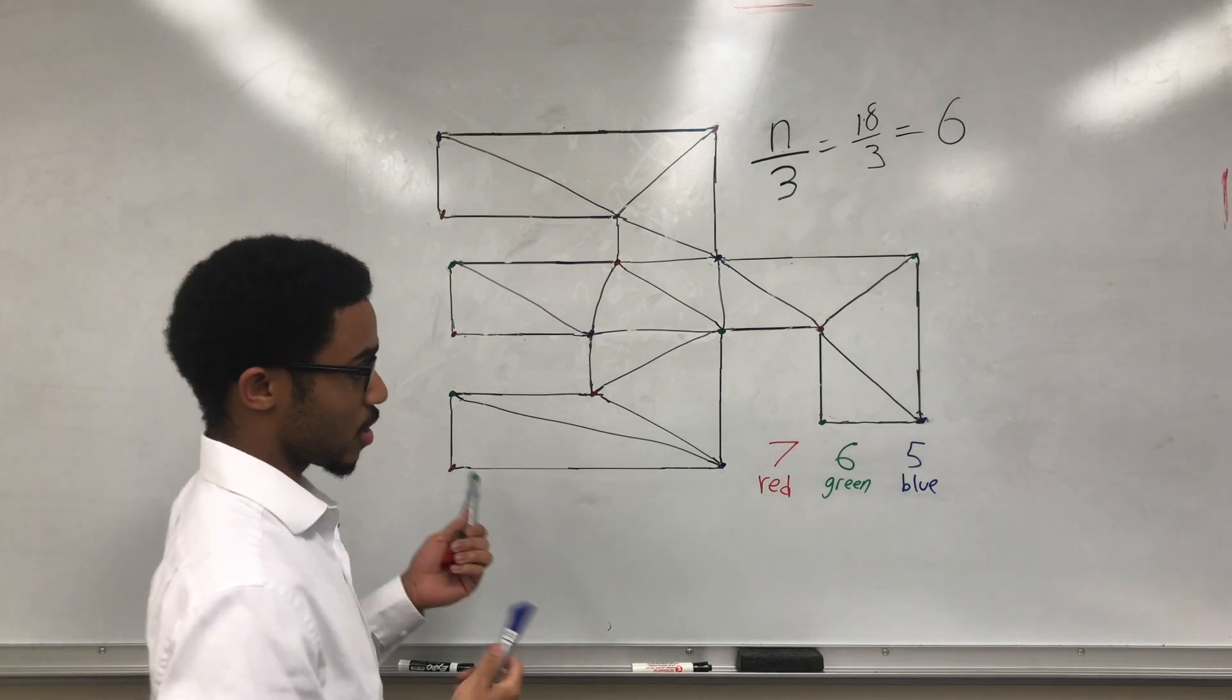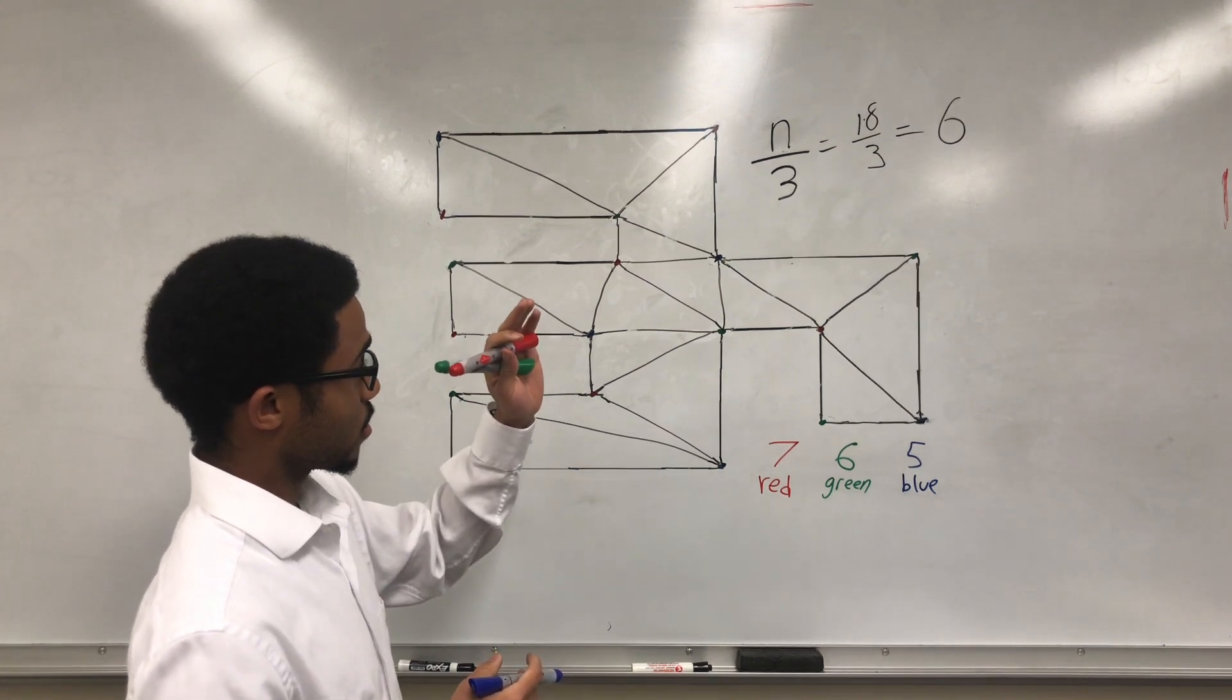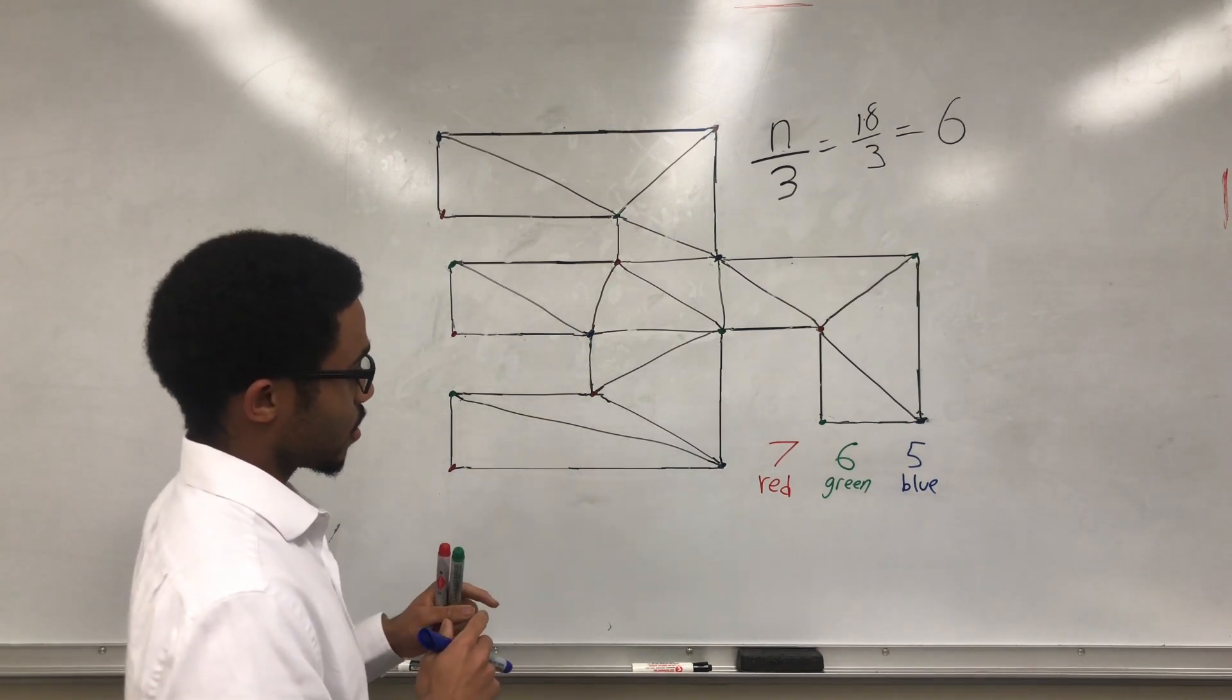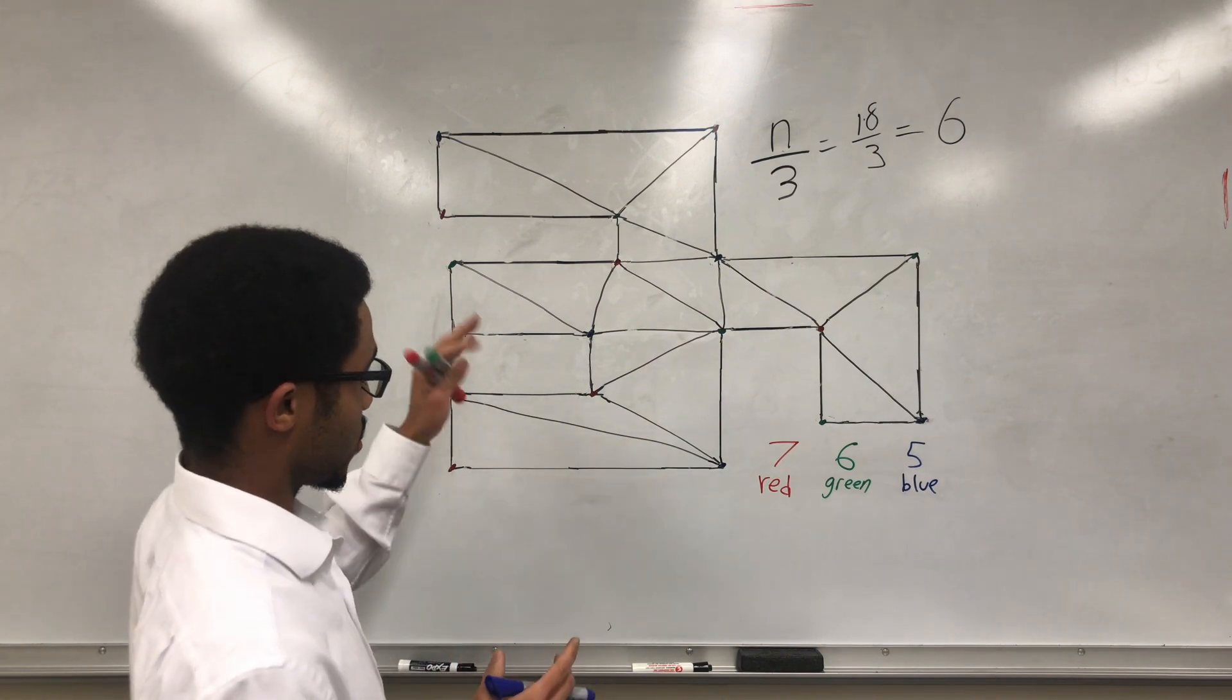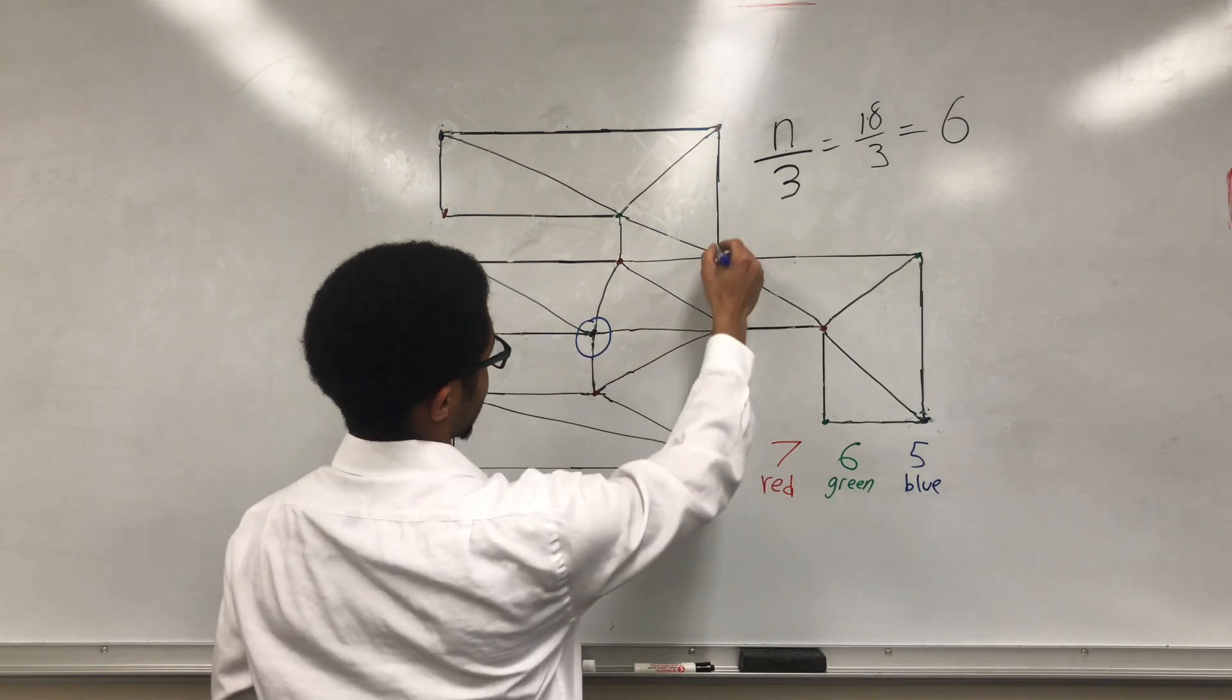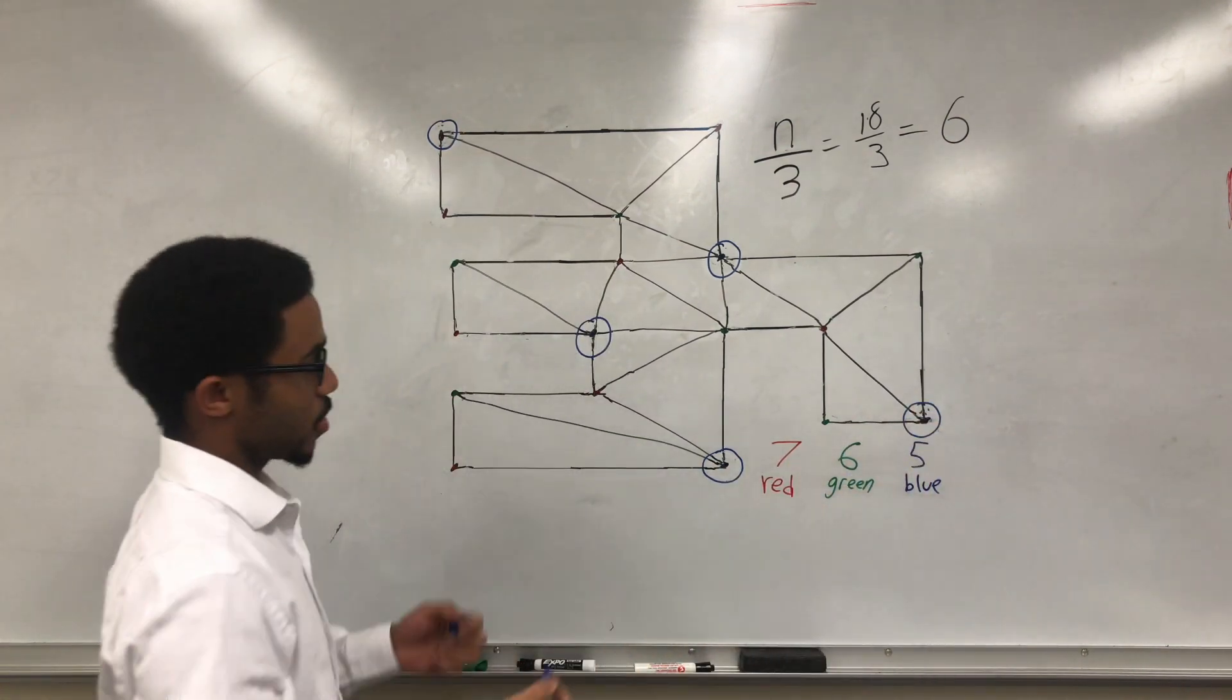So here we see that the color with the lowest number of vertices is blue. And blue is, the 5 is less than the 6, which is what we got for the n over 3. So now we've narrowed it down to 5, which is a more efficient amount of guards we need to guard the whole floor. We'll see that by placing the guards at these points where we have the blue vertices, we would always guard the floor.